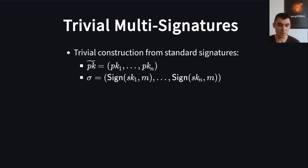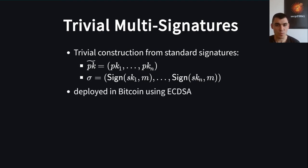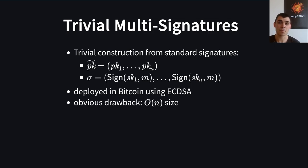It is trivial to construct multi-signatures from standard signatures — just concatenate individual public keys and individual signatures. This is possible in Bitcoin today using ECDSA. But for N signers, this requires O(N) space and verification time. This is particularly bad in blockchain systems, where storage is very expensive and all nodes need to verify all signatures on the blockchain.